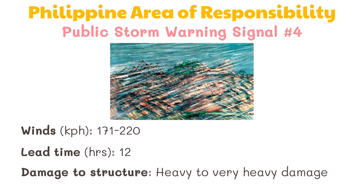In Signal Number Four, winds of 171 to 220 kilometers per hour may be expected in at least 12 hours. Heavy to very heavy damage is expected to structures, and storm surge is expected to reach two to three meters in coastal areas. Residents are required to evacuate immediately, all travels and outdoor activities should be cancelled, and the locality is very likely to be hit directly by the eye of the typhoon.